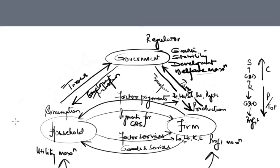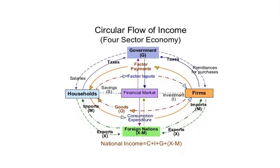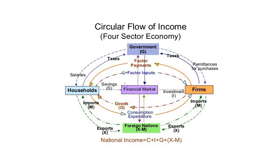On similar lines, we can understand a more complex model — a four or five entity model. In this five entity model, we have the households and firms discussed previously, the government, and then two additional entities: the financial system or financial market, and the foreign nations or other countries with which a country does trade in an open economy setup. We can still see a bi-directional flow between these entities, understood as the real and monetary flow.